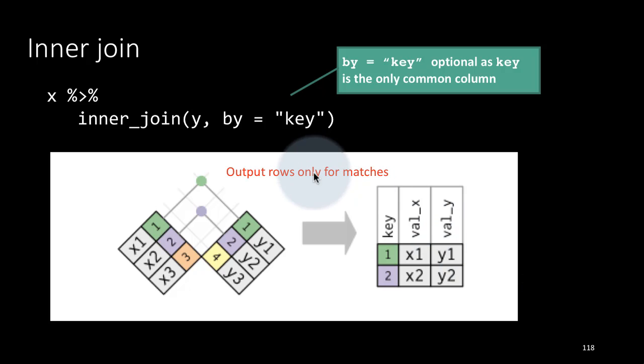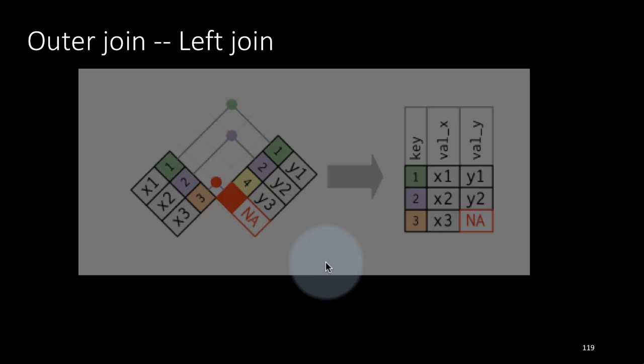Inner join outputs rows only for matches. We've been looking only at inner joins, but the very name hints that there are other kinds of joins — those are jointly referred to as outer joins. There are three types of outer joins we will talk about: left join, right join, and full join.